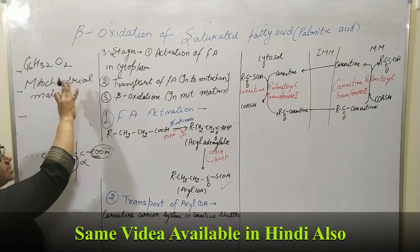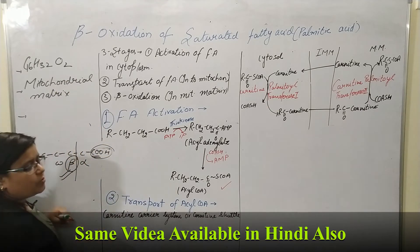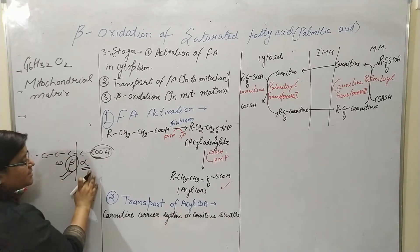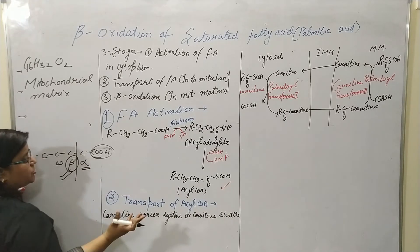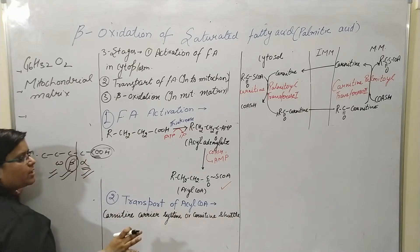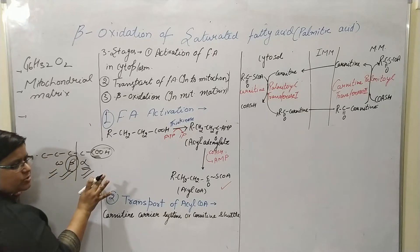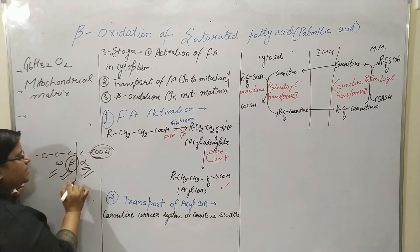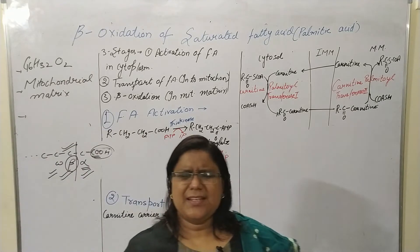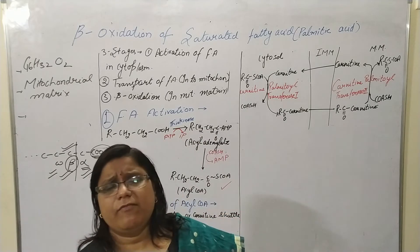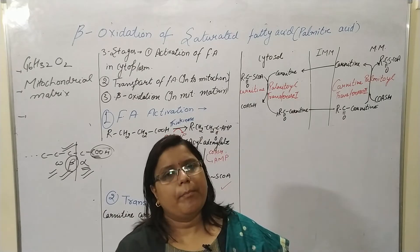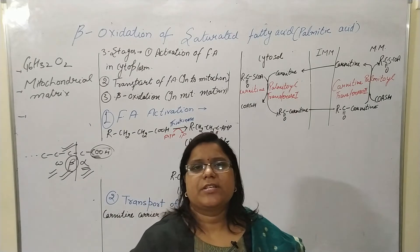Beta oxidation is named so because the oxidation of the beta carbon takes place. You might ask: does alpha oxidation take place? Yes, sure — alpha oxidation also takes place. Does omega oxidation take place? Yes, omega oxidation also occurs in the cell. But preferably we study beta oxidation, as it is the most important. In some university courses, alpha and omega oxidations also appear.